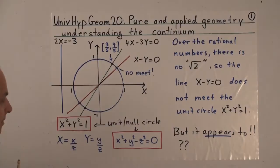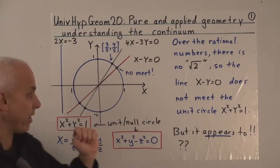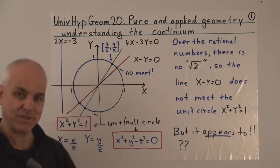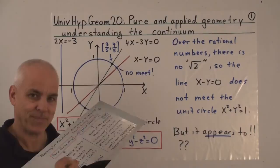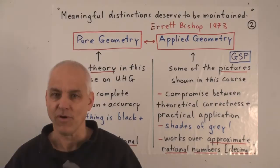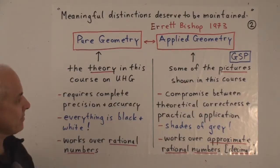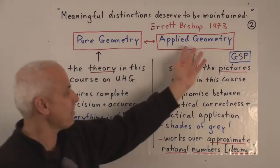Today we want to talk about the distinction between the pure approach — where we insist this line does not meet the circle — and a more applied approach where we stick with the picture and say it looks like it meets the circle. Eruch Bishop was a well-known American mathematician who advocated a constructive point of view towards mathematics. One of his important quotes, which is one of my favorites, is: 'Meaningful distinctions deserve to be maintained.'